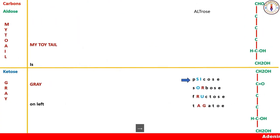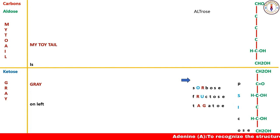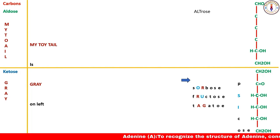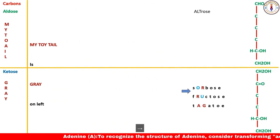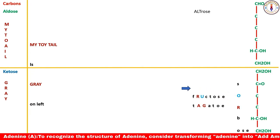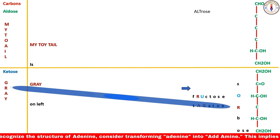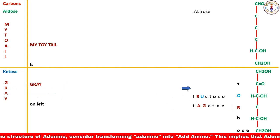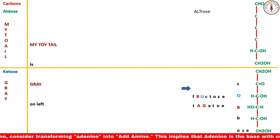The next sugar is psicose — remember, psicose is the second name of allulose. Applying the same rules, all OHs will be on the right side. For sorbose, O and R are important. O does not belong to 'gray,' so the hydroxyl group is on the right side there, while R belongs to 'gray,' so OH there is on the left side. Apply the same rules to the rest of the keto-hexoses.